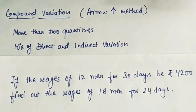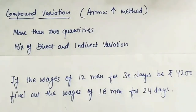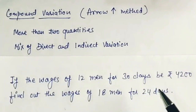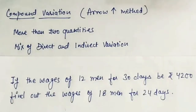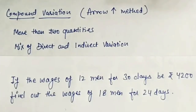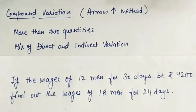One problem that often happens with compound variation is that sometimes we cannot identify whether there is a question of inverse variation or direct variation — sometimes we don't understand it. So using the arrow method, we can easily find out with the arrow pointer which variation is going on and how we are going to solve it.